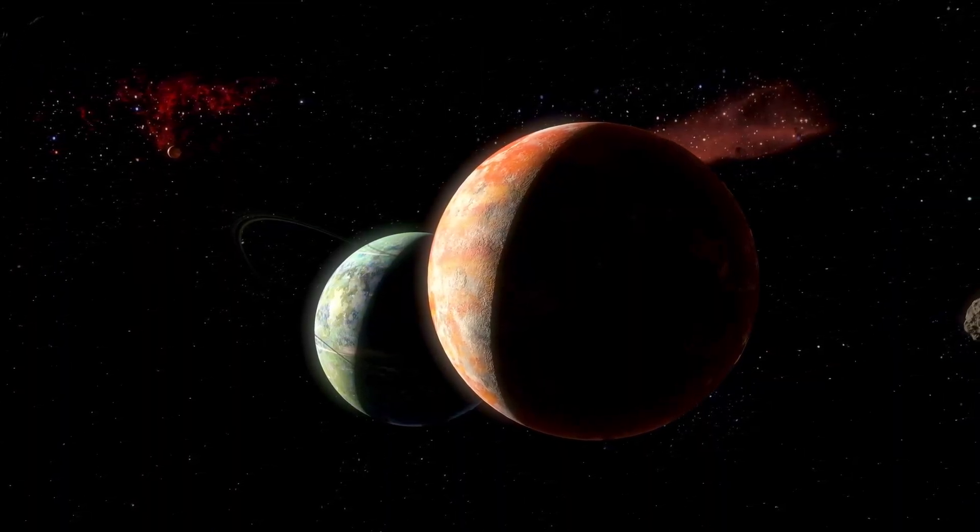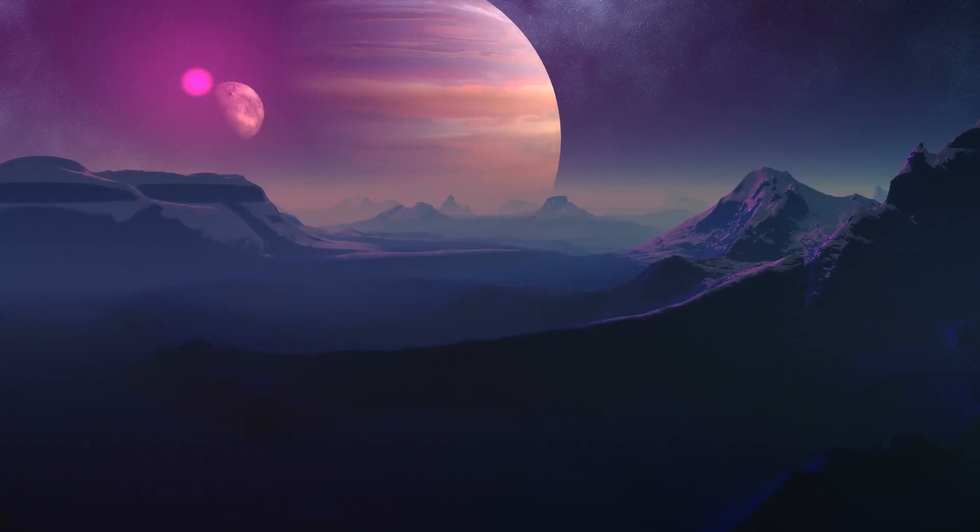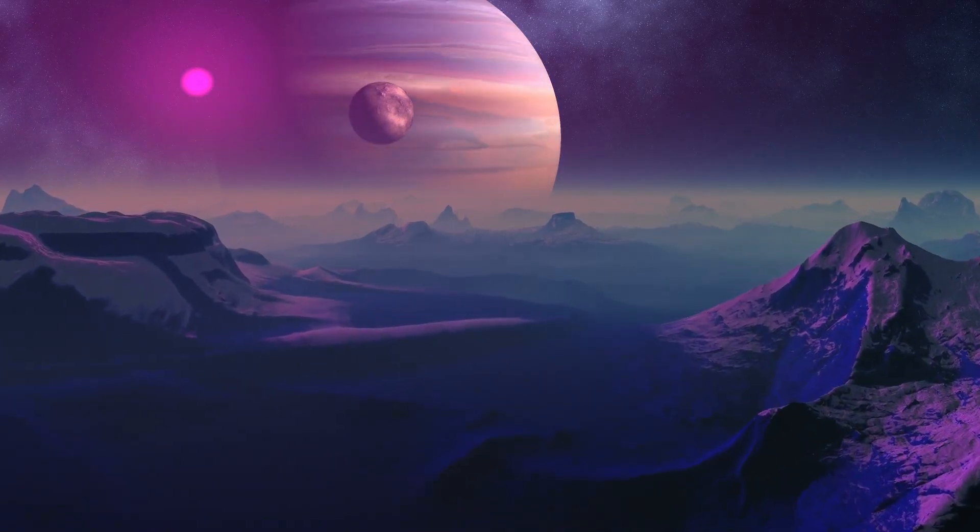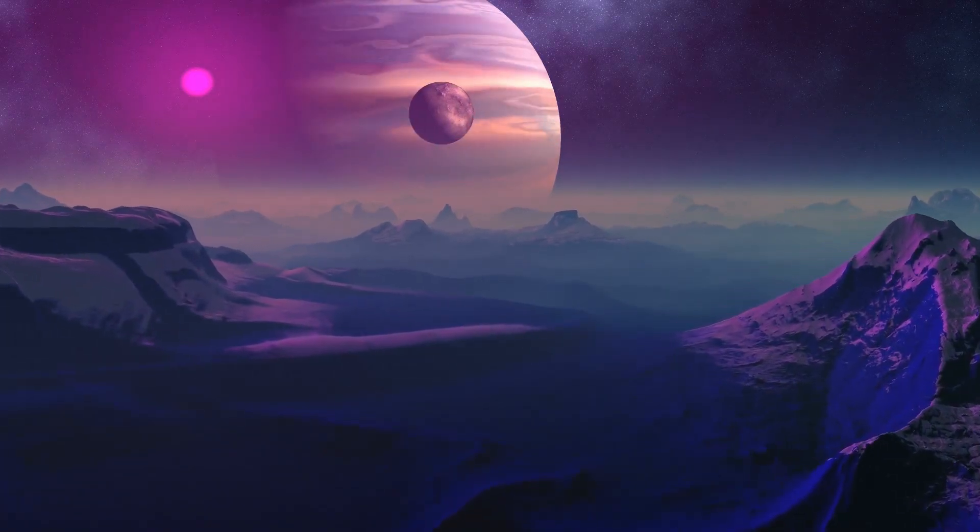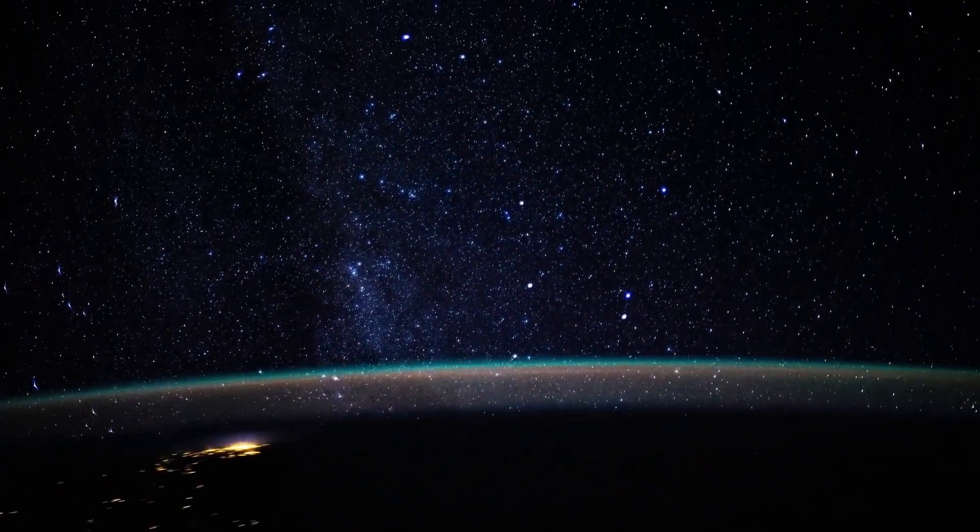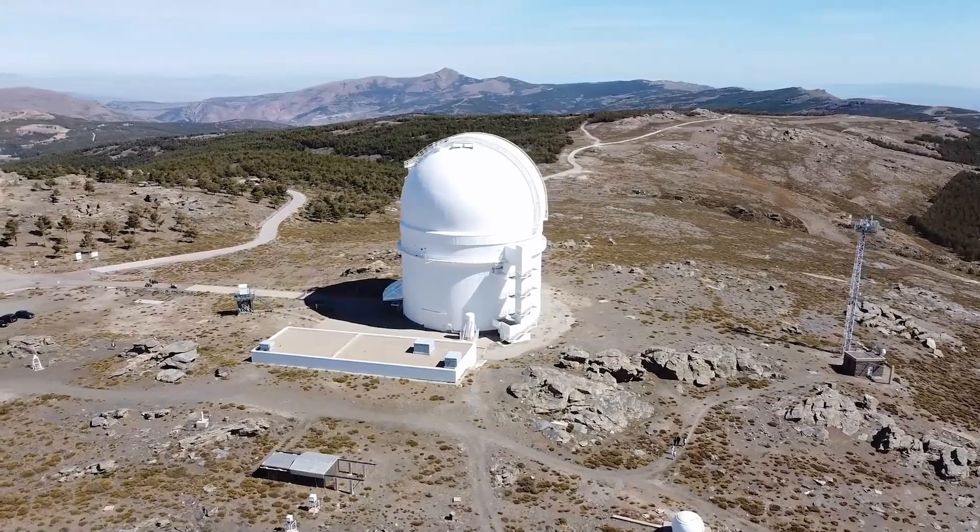But don't pack your bags just yet. Proxima b comes with some serious challenges. First off, it's probably tidally locked. This means one side of the planet always faces the star, and the other side is stuck in eternal night. Imagine living on a planet where one half is burning hot all the time, and the other is frozen solid. Not exactly cozy.